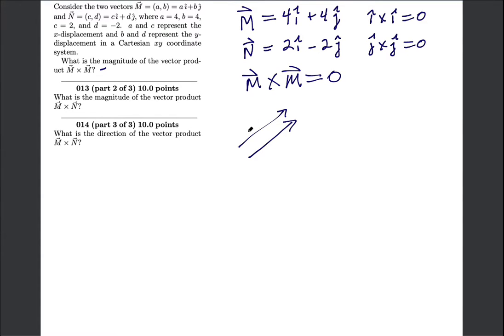What component of this vector is perpendicular to that? None of it. So the answer is definitely zero. That's not a thing, you can't get a cross product if the vector is being crossed with itself.